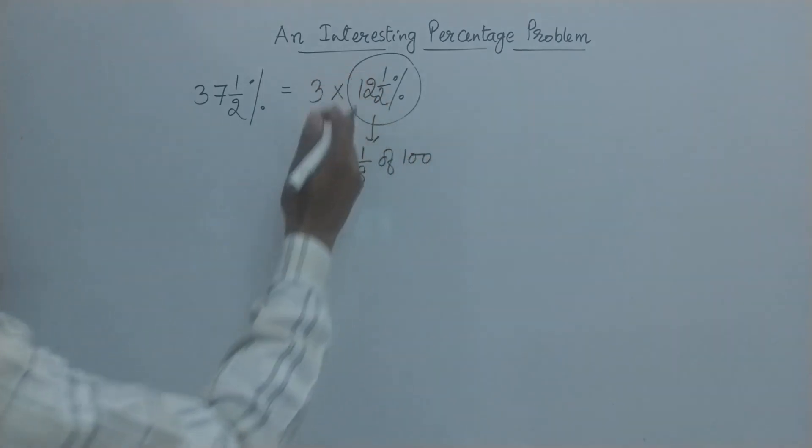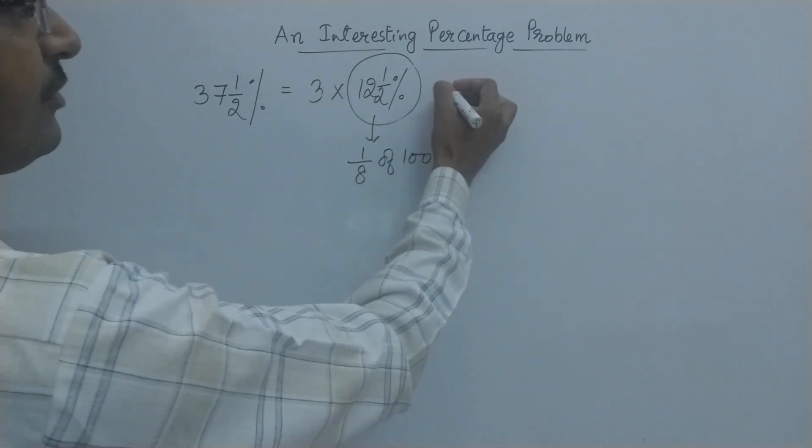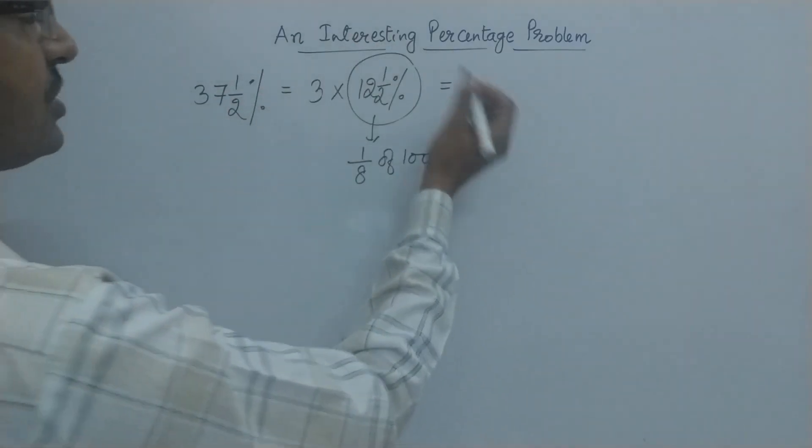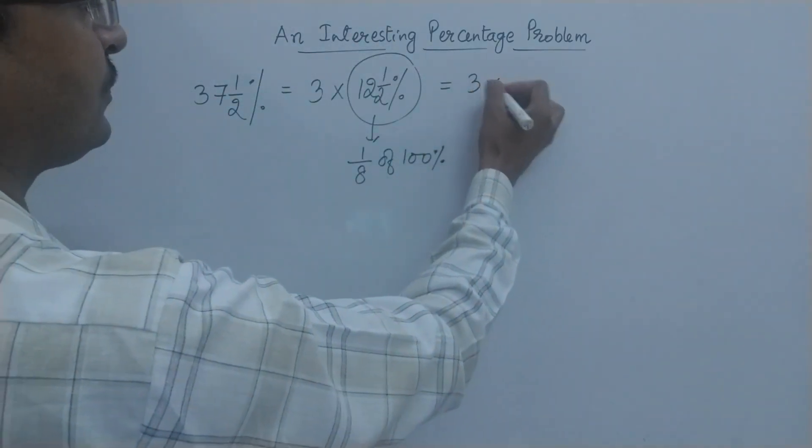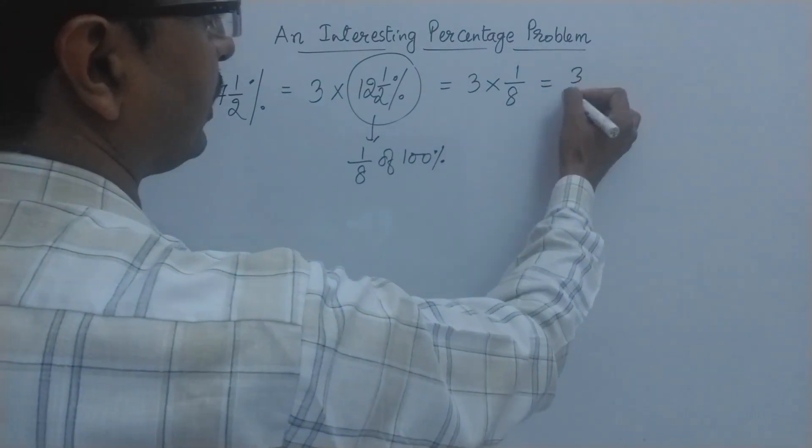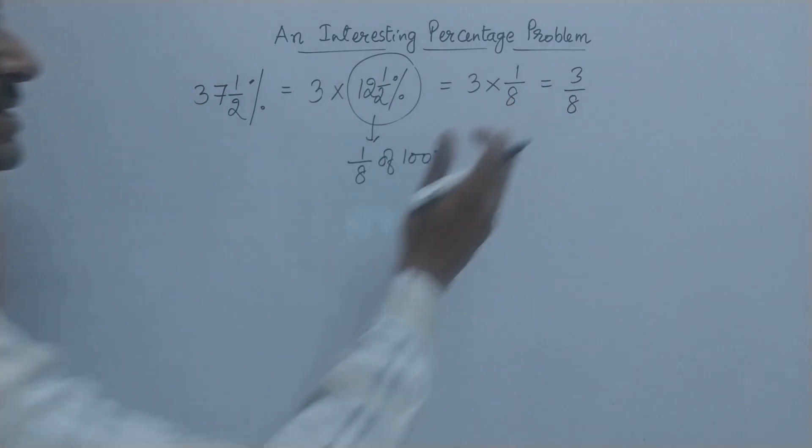12.5% is 1/8th of 100%. That means if you want to convert 37.5% into fraction, then this becomes 3 times 1/8. So that is actually 3/8. Now this concept of converting 37.5 into 3/8 can be used to solve a variety of problems.